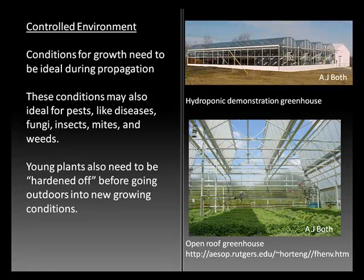Before plants are sold or prepared for final planting, they also need to be hardened off. What that means is preparing them to be exposed to the more variable conditions of wind, direct sunlight, fluctuations in temperature, and changes in humidity. There's a definite process of hardening off that needs to be observed prior to sale or planting.